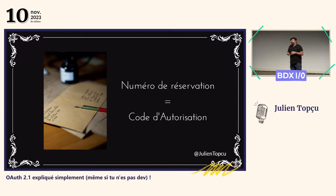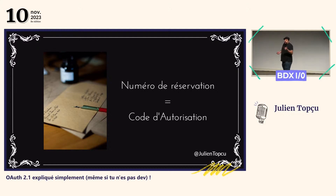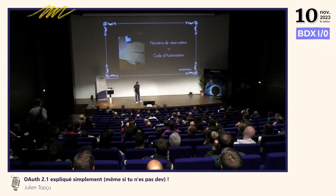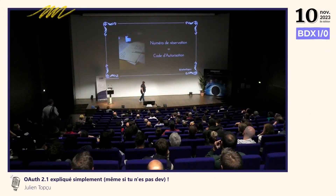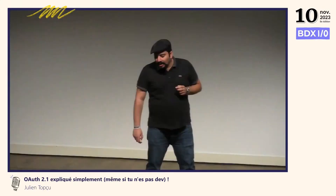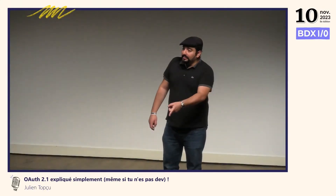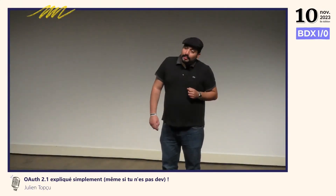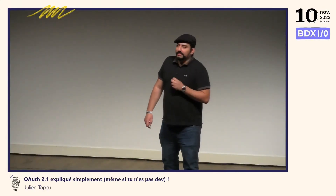On n'a plus notre problème de révocation, parce que c'est facile : vu que chacun a son numéro de réservation, c'est facile de révoquer les accès indépendamment les uns des autres. Ce qu'on appelle l'authorization code.